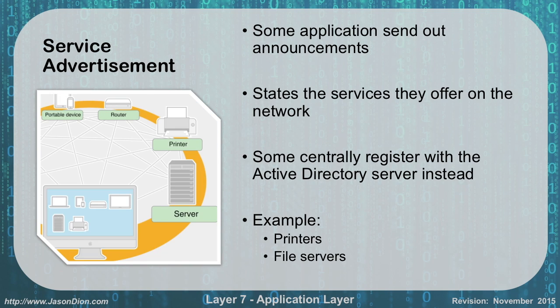For service advisement, this is where applications can send out announcements of services they offer. For instance, you might have a printer on the network that says, 'Hey, I'm a printer, you can use me.' If you're a Macintosh person, there's a service application advisement thing called Bonjour, which announces, 'Hey, there's a file server here or a printer server here, you can use these.' With Windows, this is usually registered with an Active Directory server on the network that then does those advisements for you. Generally these are going to be printers and file sharing and things of that nature.